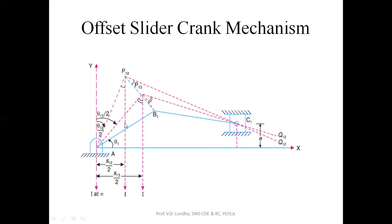This line intersects the vertical line which is at half distance for the second position of the crank. The third position line should intersect that point as well. Then you join to get two pole points: P12 as the first pole point and P13 as the second pole point. You then measure the angles — for example, naming points E and F — angle A-P12-E should be equal to angle B1-P12-Q12.